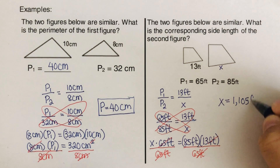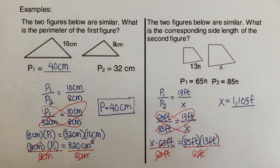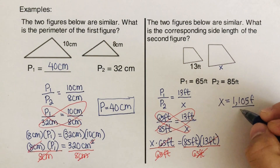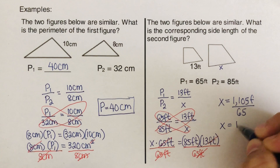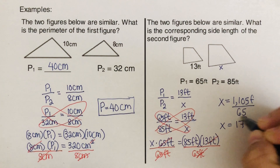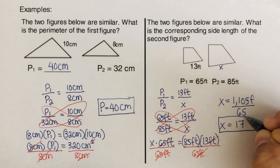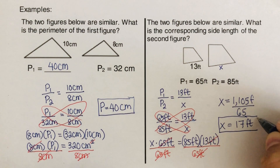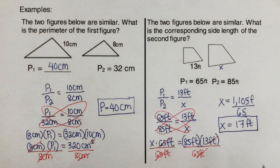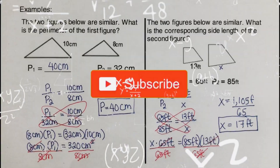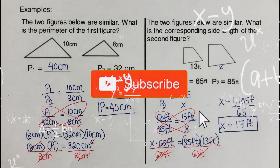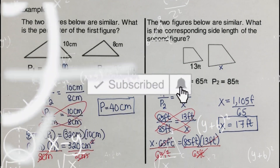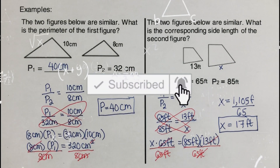Dividing 1,105 by 65 gives us x equals 17. The final unit is feet, so x equals 17 feet. Did you get the same answer? Good, perfect! If you find this video helpful, hit like and subscribe for more math videos. See ya!